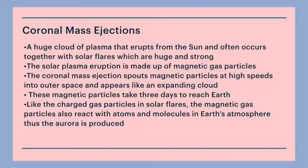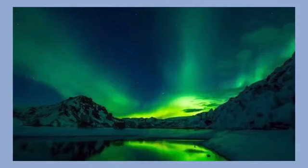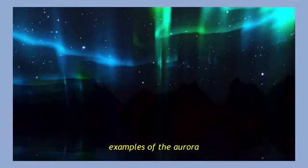Like the charged particles in solar flares, the magnetic gas particles also react with atoms and molecules in Earth's atmosphere, thus the aurora is produced. Here are some examples of the aurora.